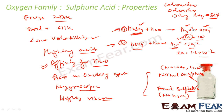H₂SO₄ gives one hydronium ion producing HSO₄⁻, and then HSO₄⁻ gives another hydronium ion — so there are two hydronium ions per mole of sulfuric acid. Therefore, it is called a dibasic acid. To neutralize one mole of sulfuric acid, we need two moles of sodium hydroxide.